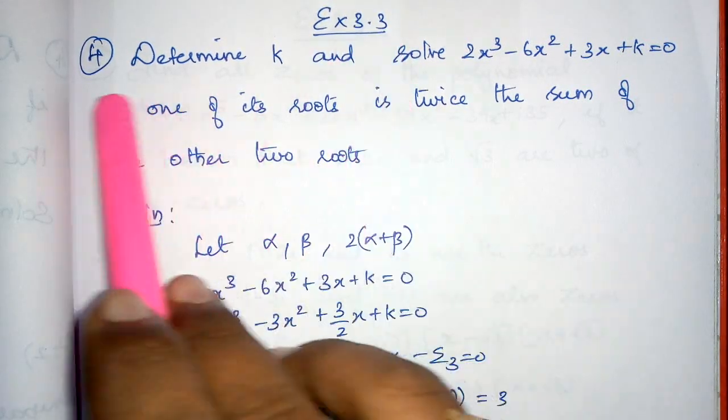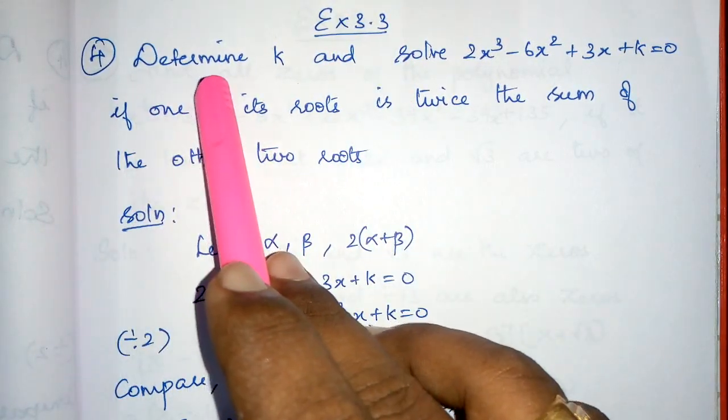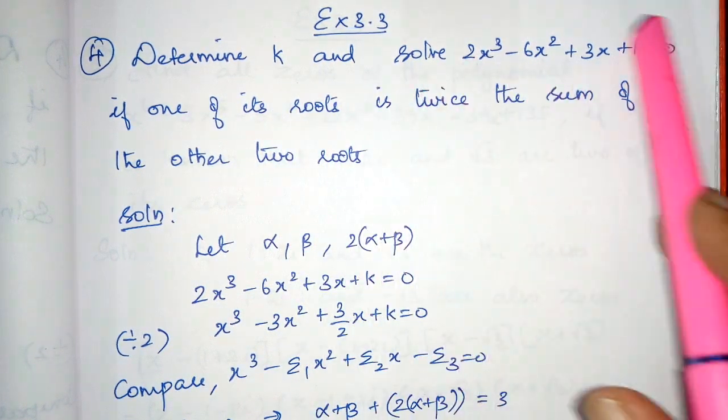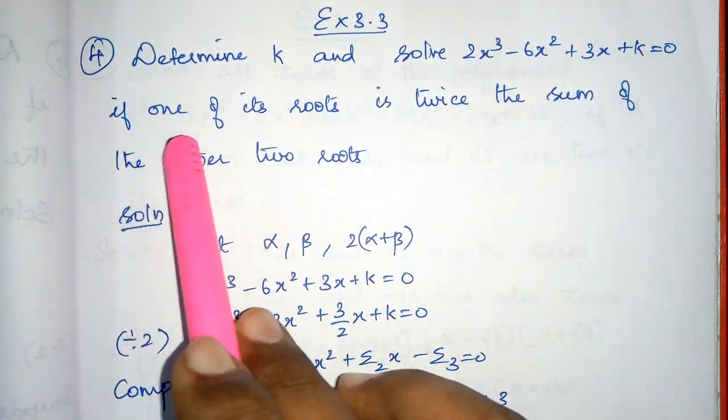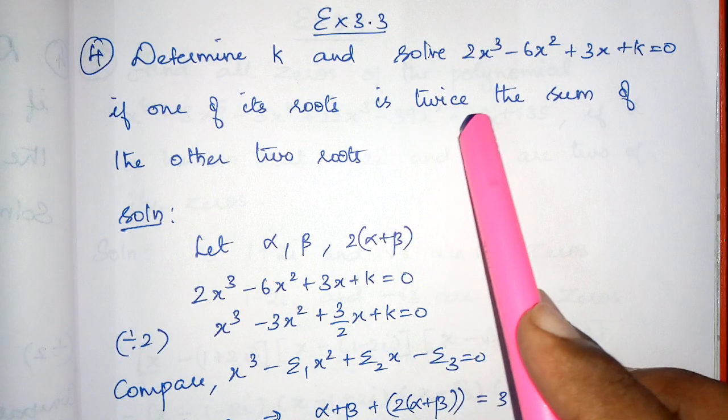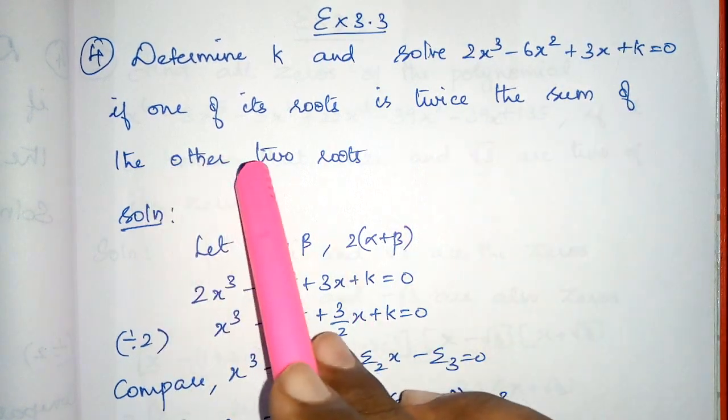Exercise 3.3, question number 4. Determine k and solve this equation if one of its roots is twice the sum of the other two roots.